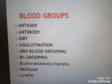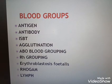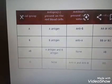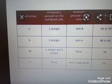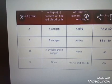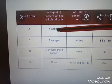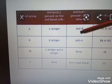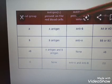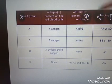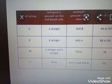The ABO blood group consists of A, B, AB, and O groups. In the A blood group, you can receive blood from the A blood group. Blood can also be received from O group.